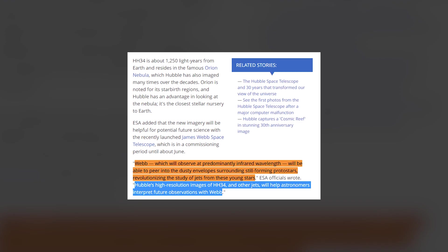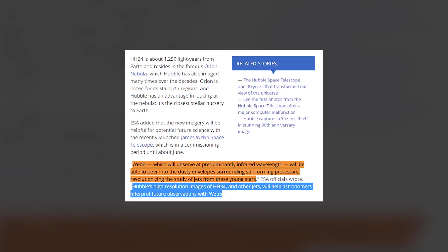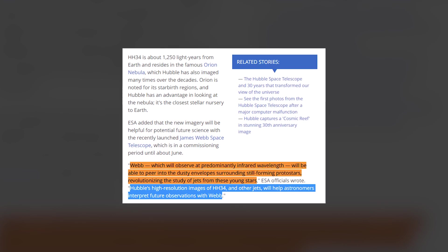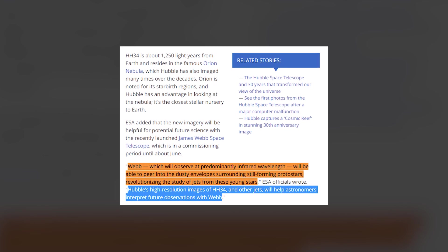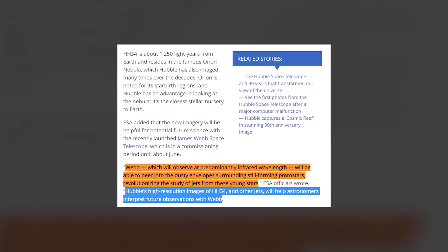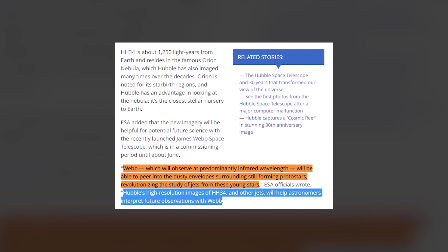Webb, which will observe at predominantly infrared wavelengths, will be able to peer into the dusty envelopes surrounding still-forming protostars, revolutionizing the study of jets from these young stars, ESA officials wrote.